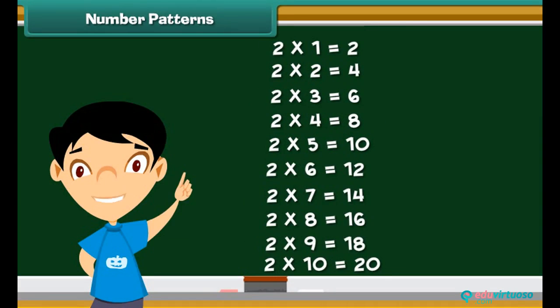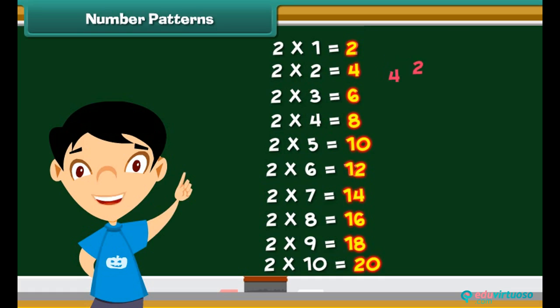Let us now make some patterns using numbers. We start with tables of 2. Look at the series: 2, 4, 6, 8, 10, 12, 14, 16, 18, 20. These numbers are arranged in a way that the difference between two consecutive numbers is always 2.